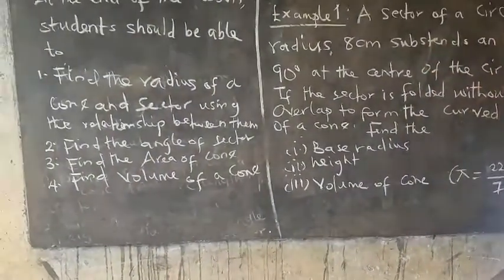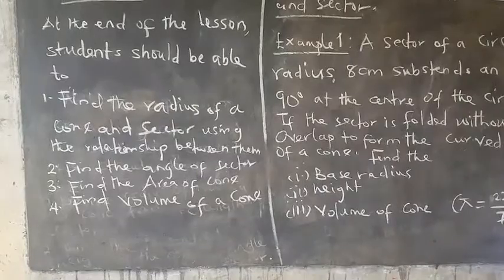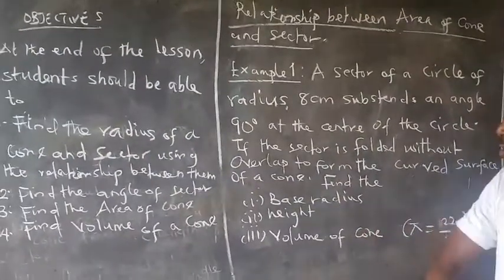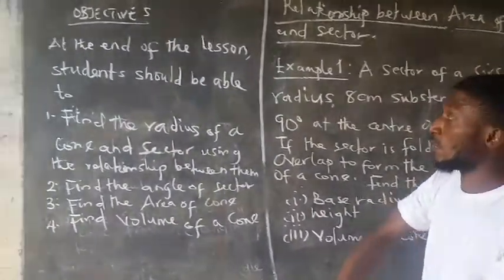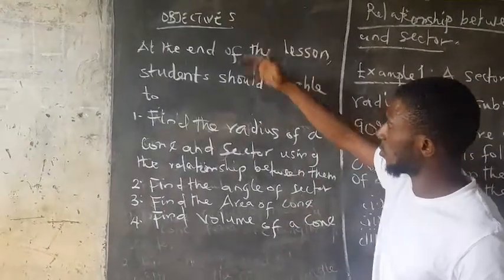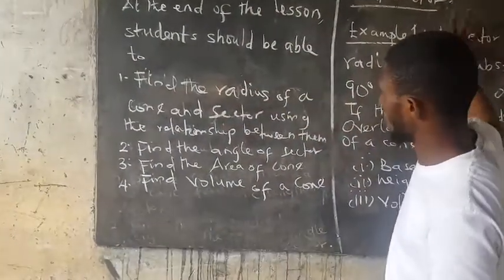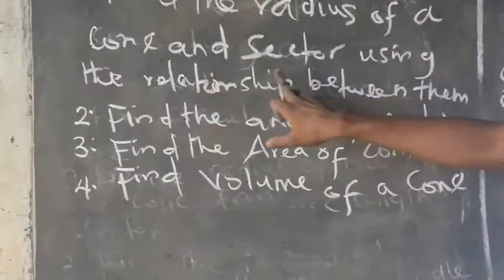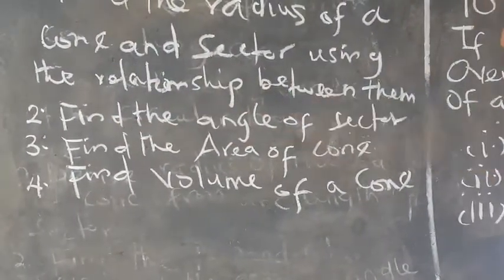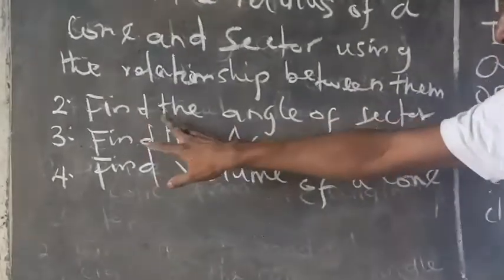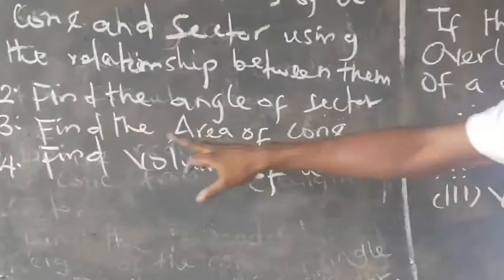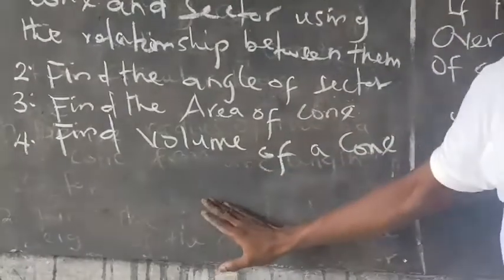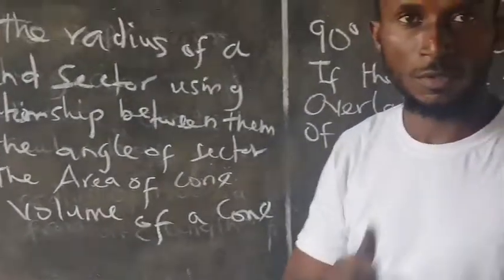Welcome back to the second period of this class on the relationship between the area of the cone and sector. At the end of the second period, you should be able to use the relationship to find the radius of the cone and radius of the sector, and also find the area of the cone and the volume of the cone.